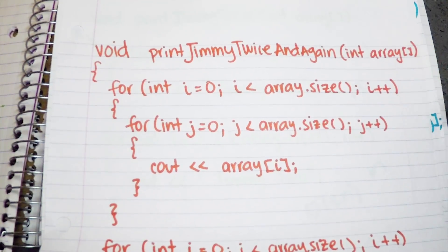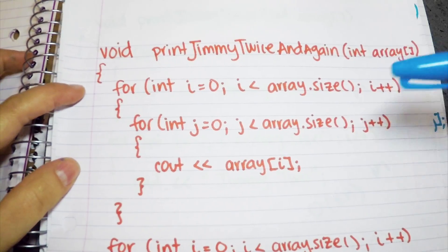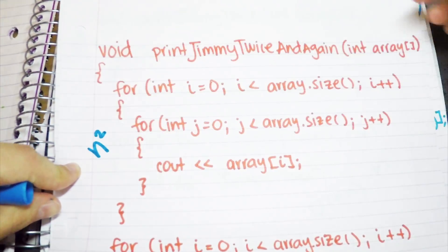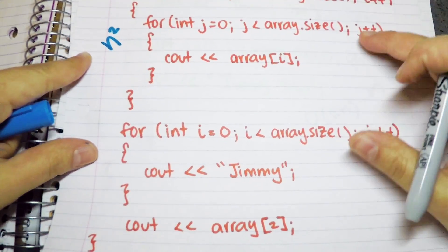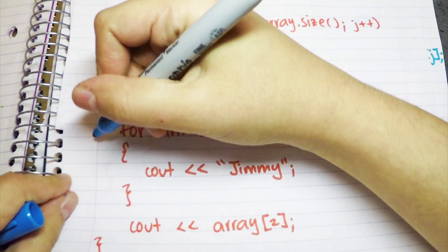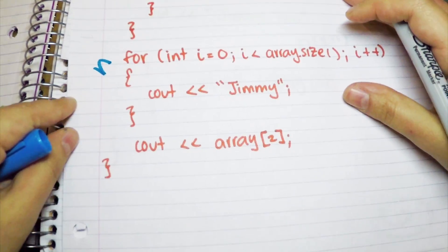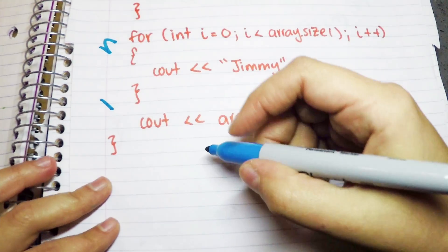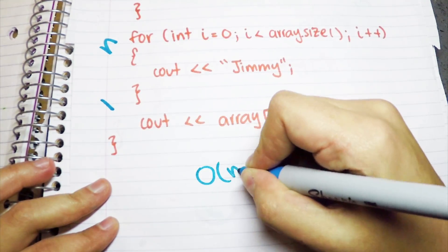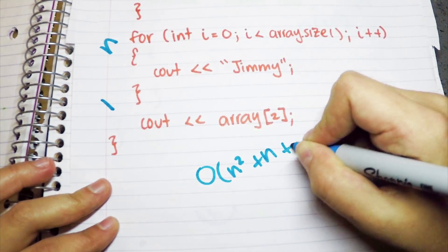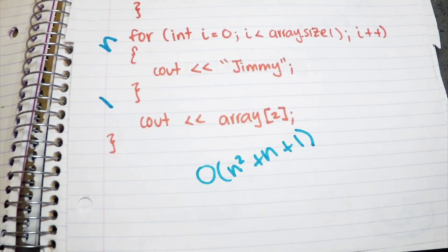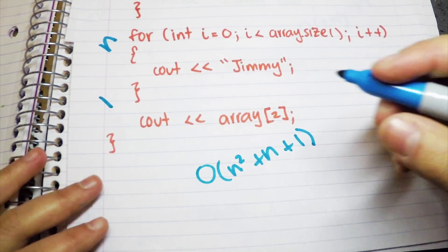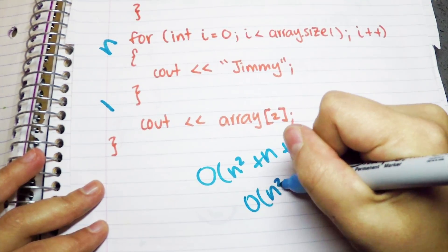In this function, I'm going to pass an array. Then I have a nested loop, which is our n squared. Then I have another loop where I iterate n number of times plus n. Then I print one element of my array, 1. This will give me O(n² + n + 1). Again, we can drop the n and 1 since they do not contribute to the growth of the runtime, giving us O(n²).